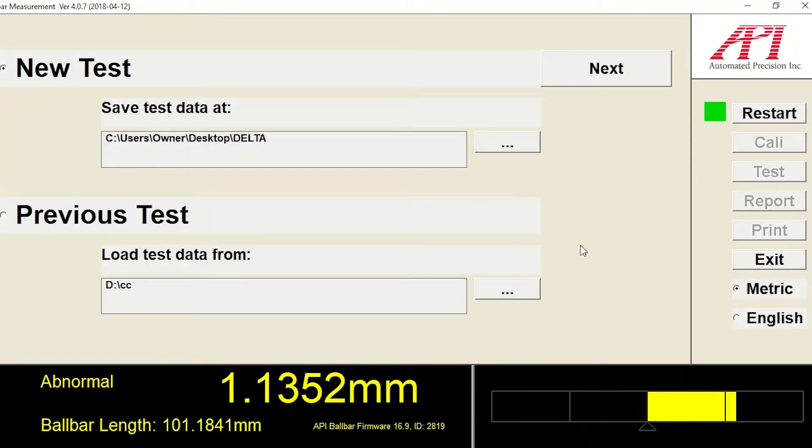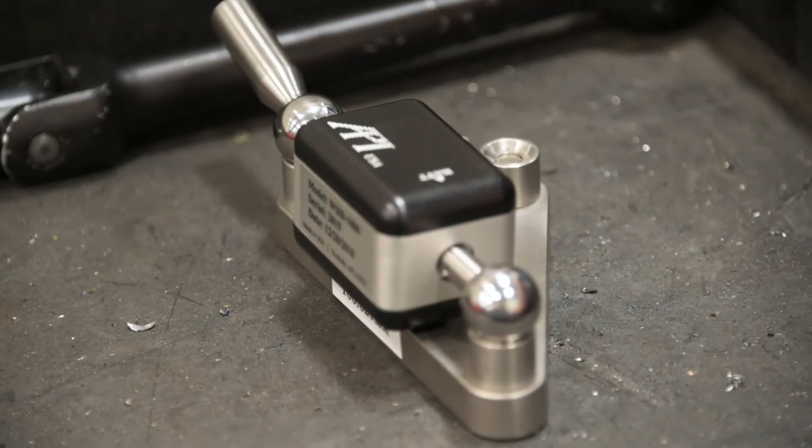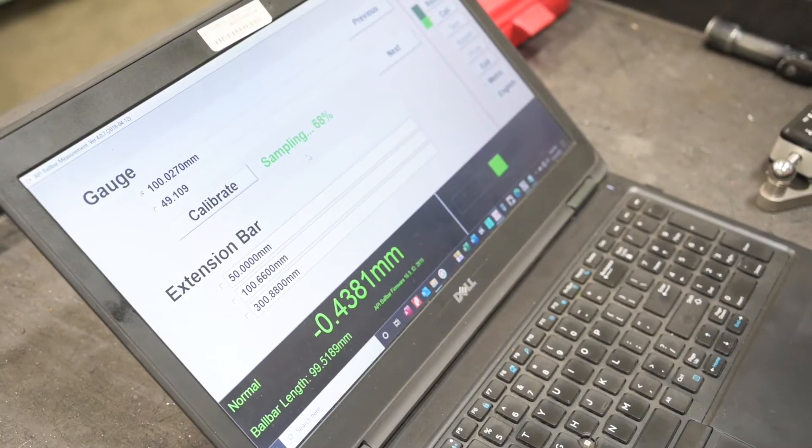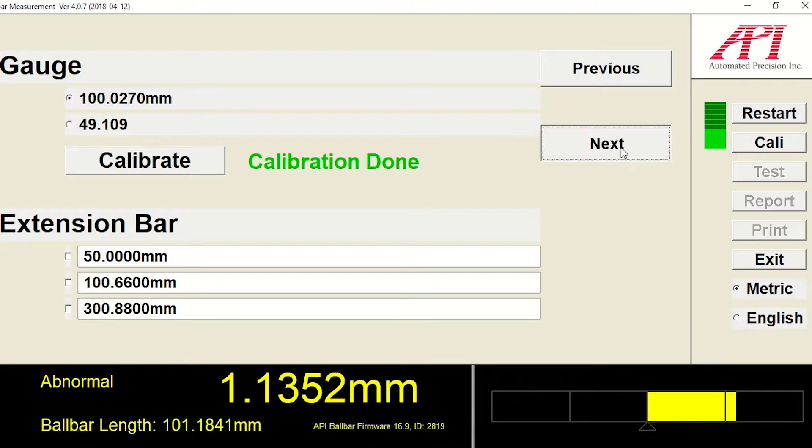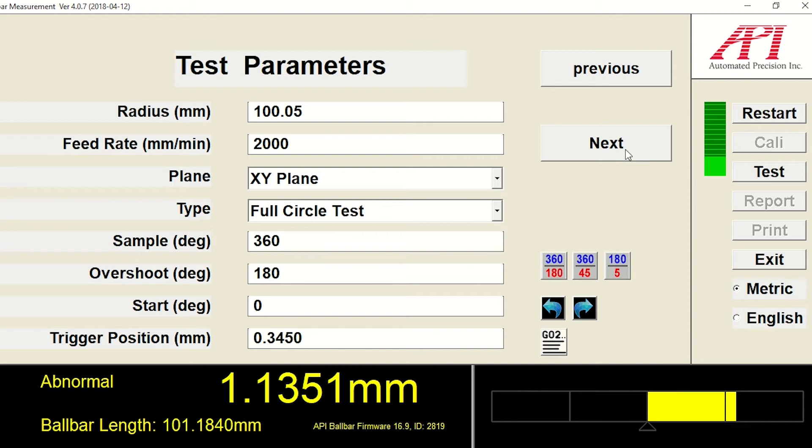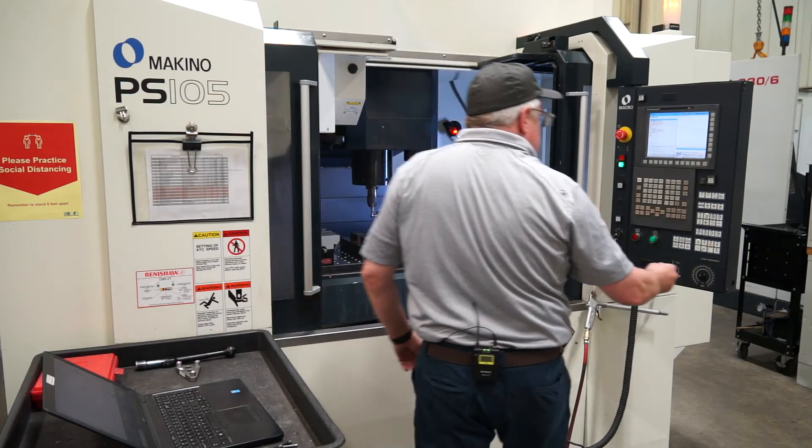You get the software set up with the right ball bar length and the right speed, calibrate it within its own calibrator, and then start your program.